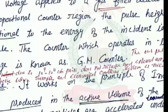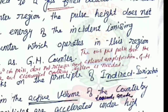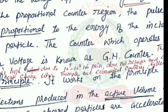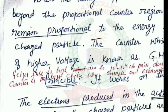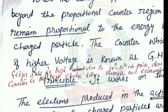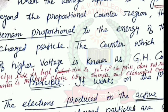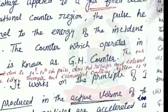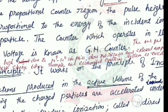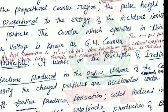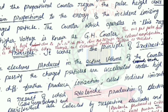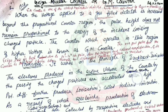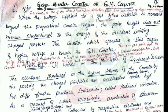The output pulse for the GM tube is high, on the order of 10^9 to 10^10 ion pairs, and does not require any external amplification for the signal. This is one of the most interesting and practical features of this counter.